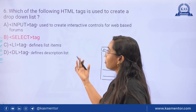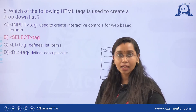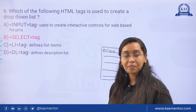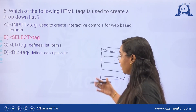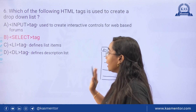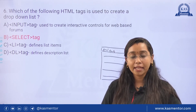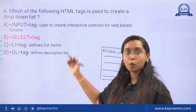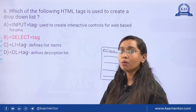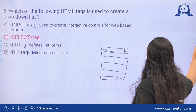Option A is the input tag, Option B is the select tag, Option C is the li tag, and Option D is the dl tag. The li tag defines list items in a list. The dl tag is the description list. The select tag is used to create a drop-down list in HTML. The answer is Option B, the select tag.